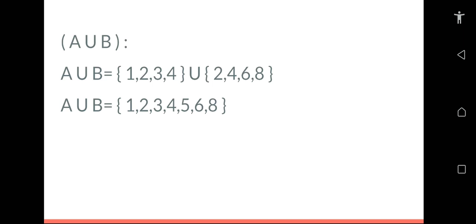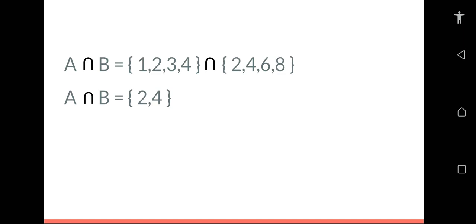Now we will find A∩B. In the intersection, we write only the common numbers that appear in both sets. In set A and set B, the common numbers are 2 and 4. So we write them in a separate set: A∩B = {2, 4}. We have now found both A∪B and A∩B, so we can proceed to subtract.